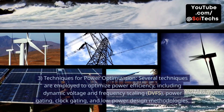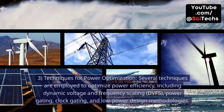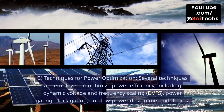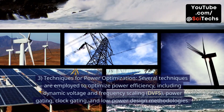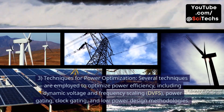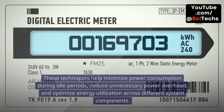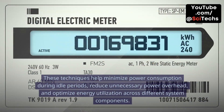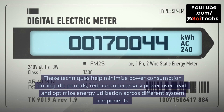Techniques for power optimization: Several techniques are employed to optimize power efficiency, including dynamic voltage and frequency scaling (DVFS), power gating, clock gating, and low-power design methodologies. These techniques help minimize power consumption during idle periods, reduce unnecessary power overhead, and optimize energy utilization across different system components.